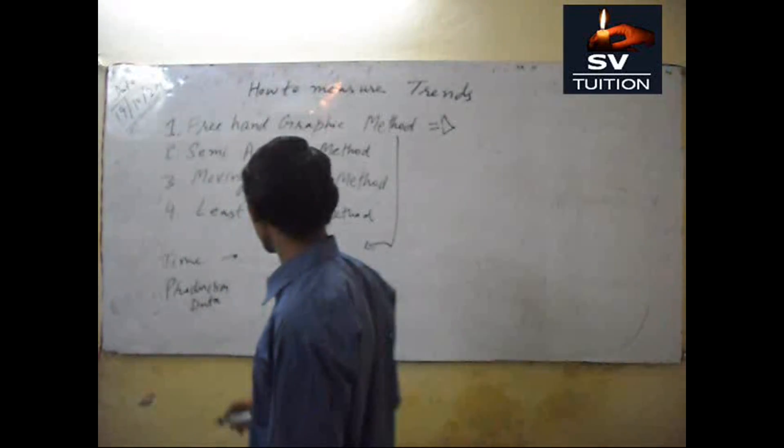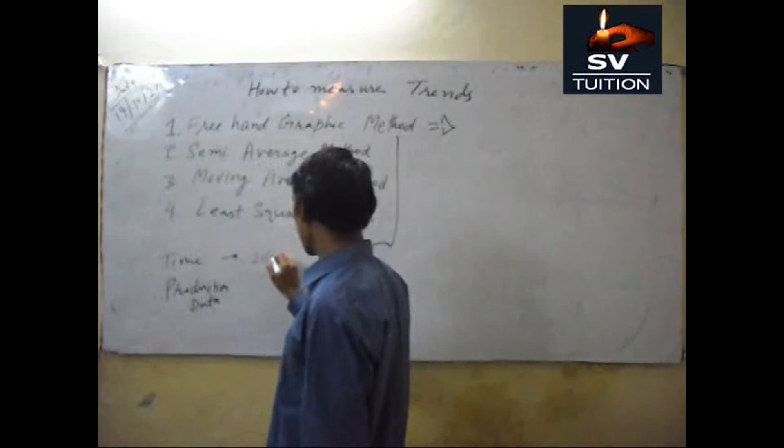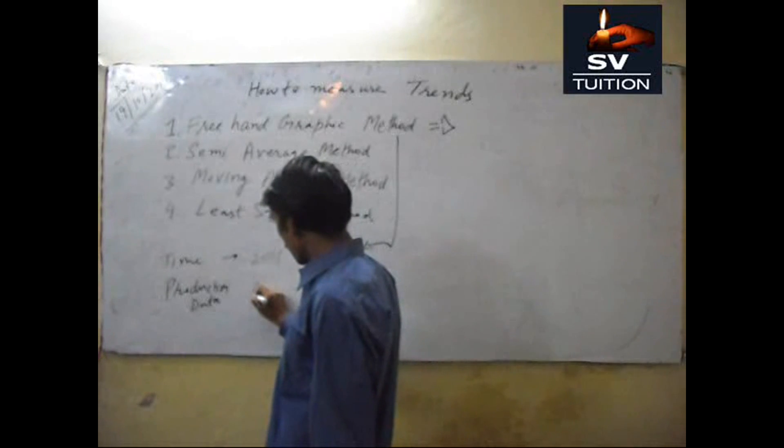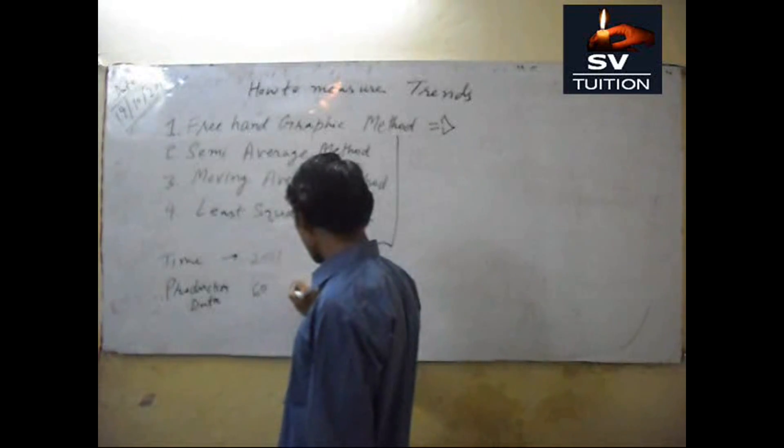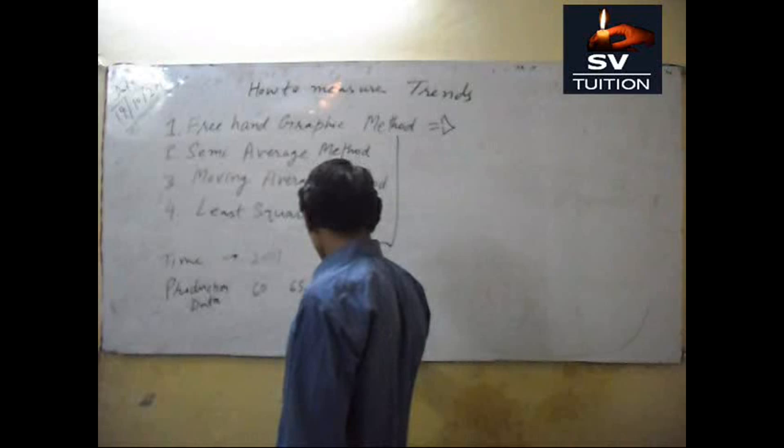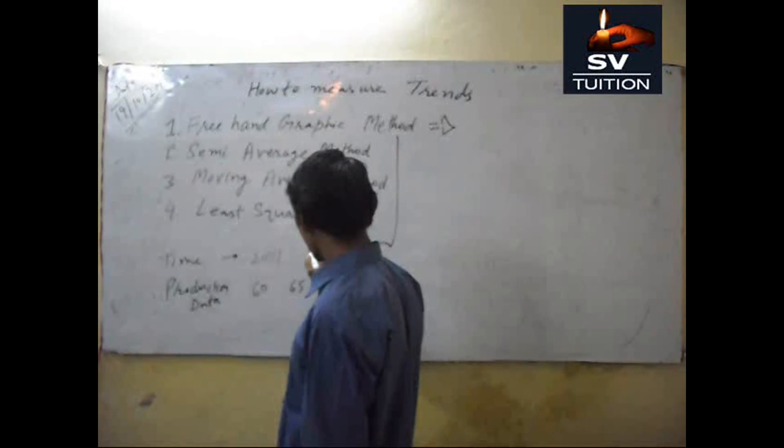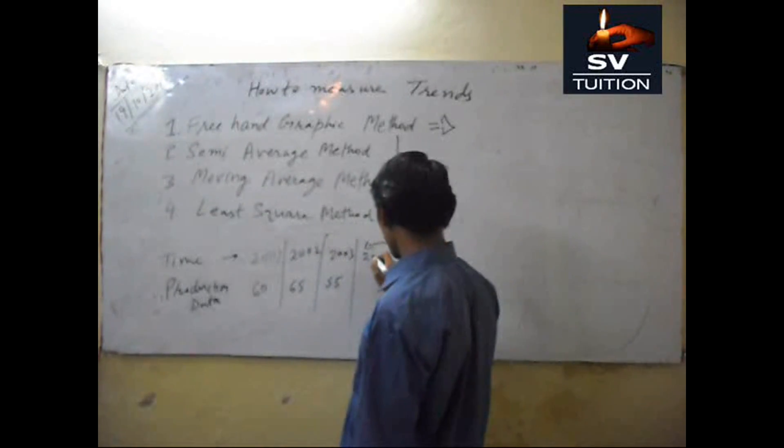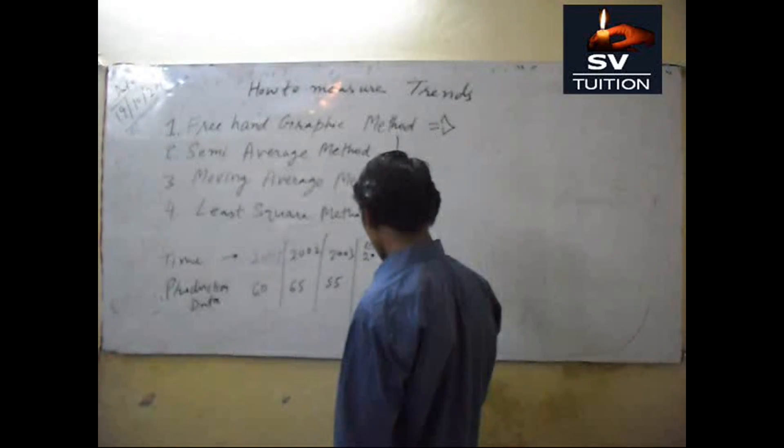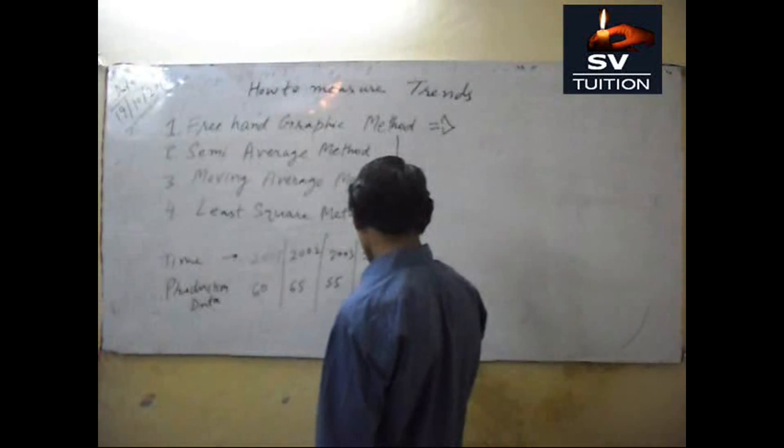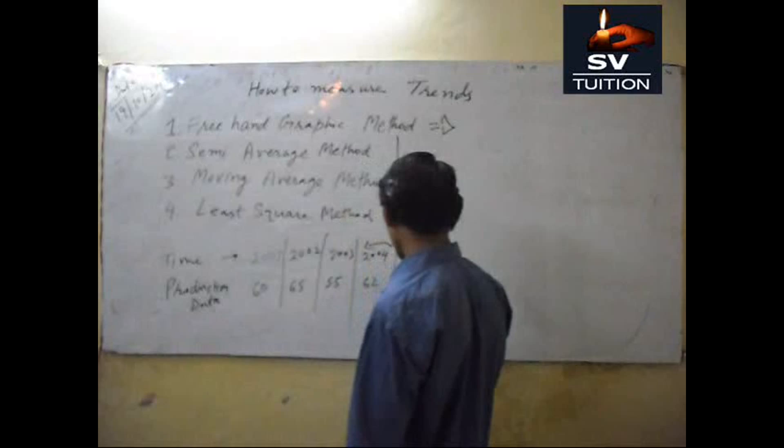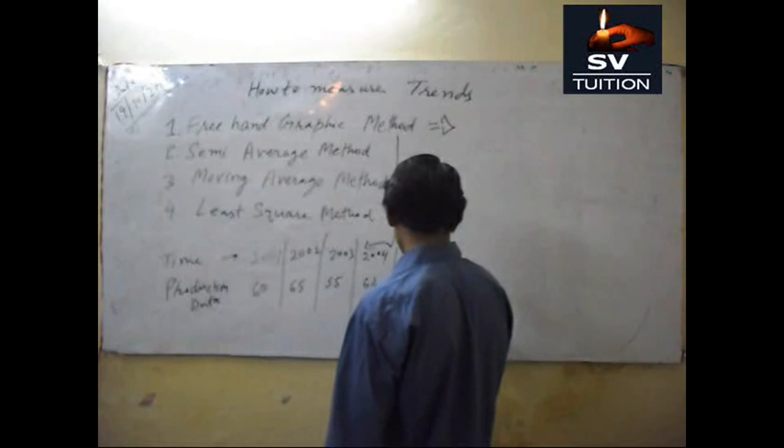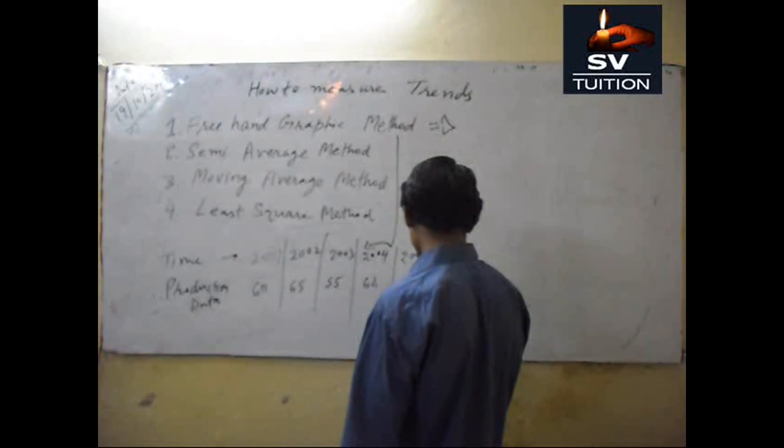Time is 2001, this is 60. Then 65. Then 55. 2002, 2003, and then 2004, this is 62. And 2005, this is 68.